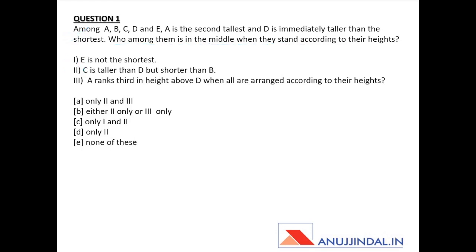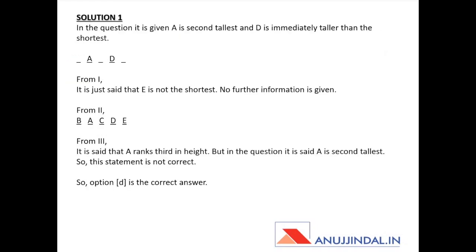The first question: among A, B, C, D, and E, A is the second tallest, and D is immediately taller than the shortest — meaning D is at the second-last position. The data given is: (1) E is not the shortest; (2) C is taller than D but shorter than B; (3) A ranks third in height above D when all are arranged by height.